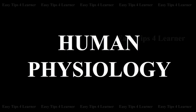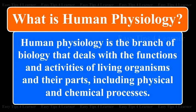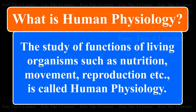Human Physiology. What is Human Physiology? Human Physiology is the branch of biology that deals with the functions and activities of living organisms and their parts, including physical and chemical processes. The study of functions of living organisms such as nutrition, movement, and reproduction is called Human Physiology.